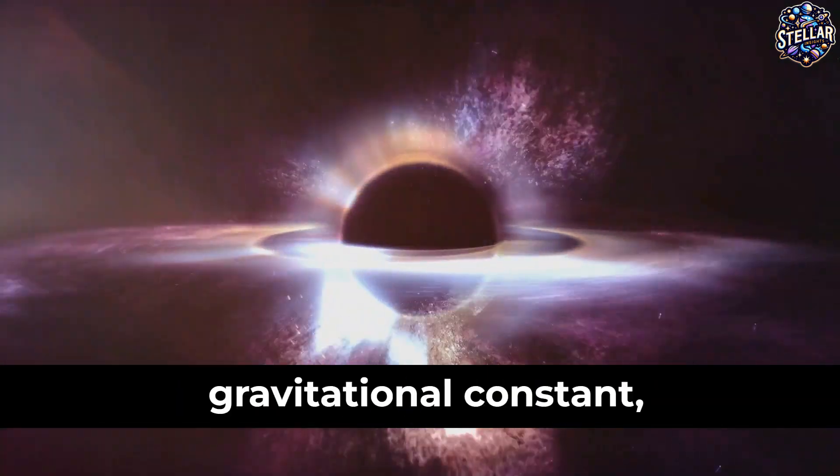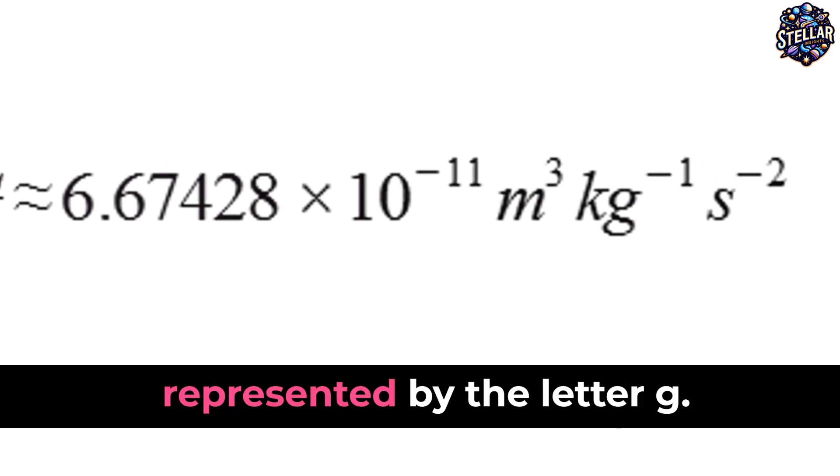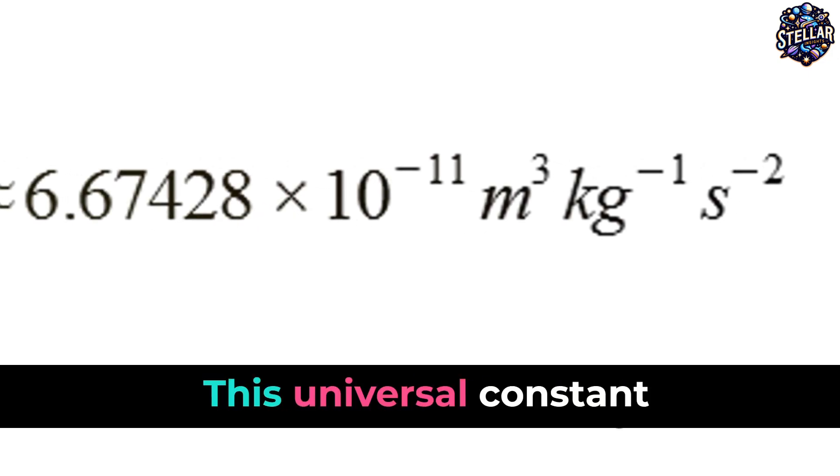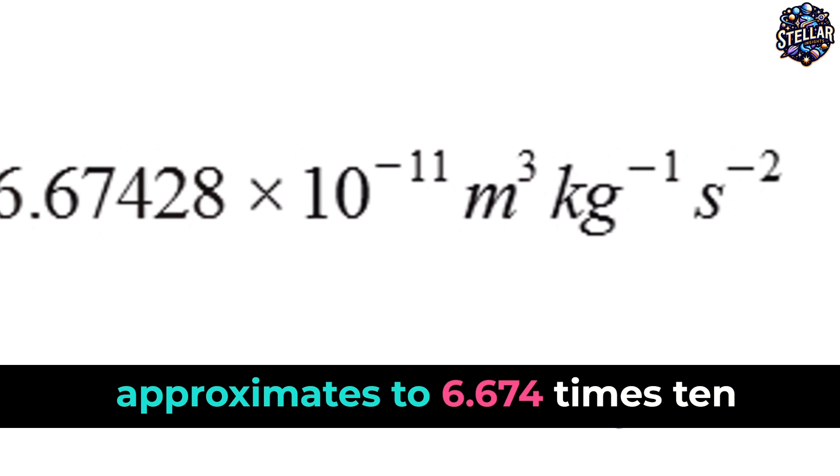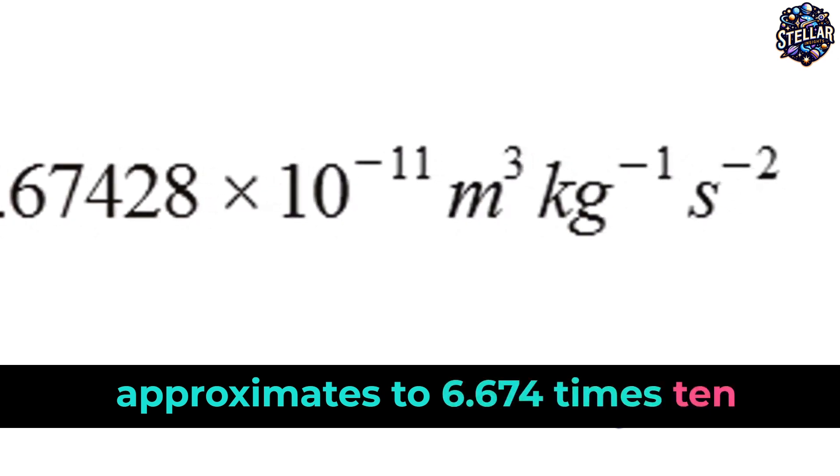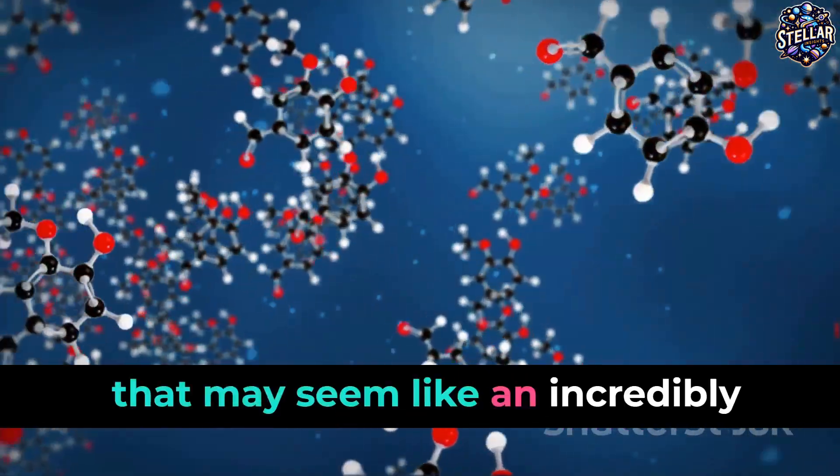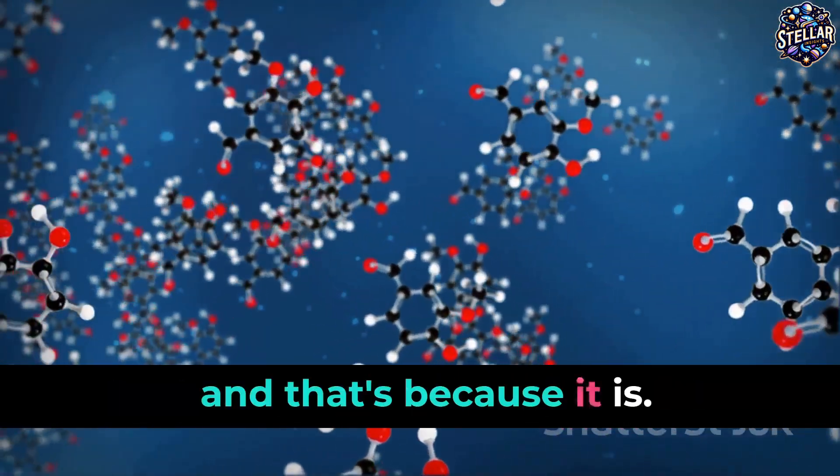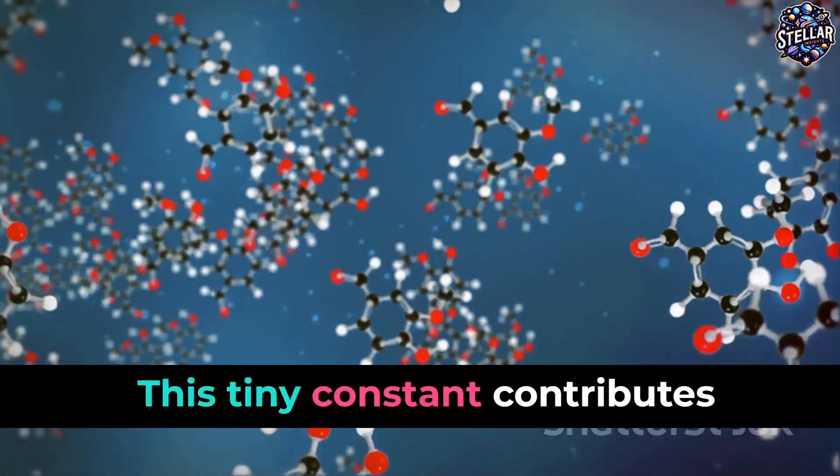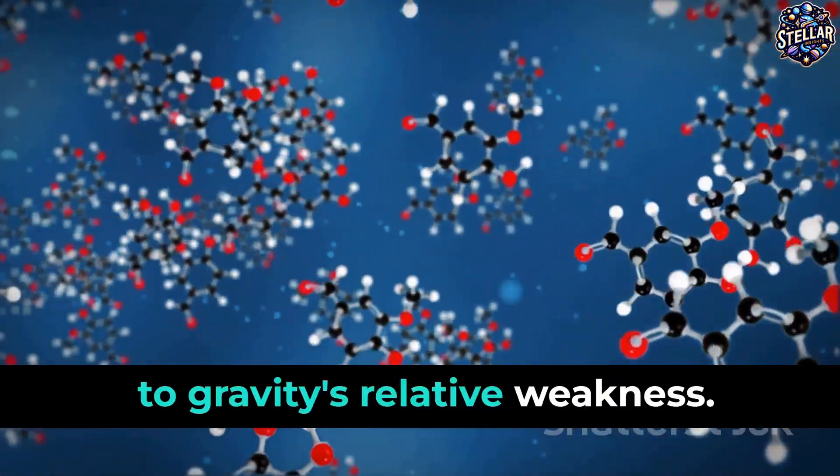This brings us to the gravitational constant represented by the letter G. This universal constant approximates to 6.674 times 10 to the negative 11 newton square meter per kilogram squared. That may seem like an incredibly small number, and that's because it is. This tiny constant contributes to gravity's relative weakness.